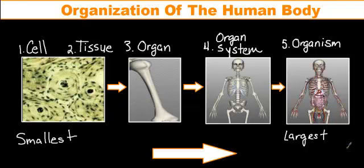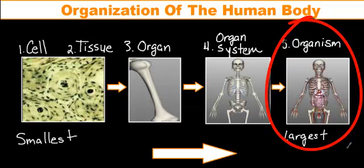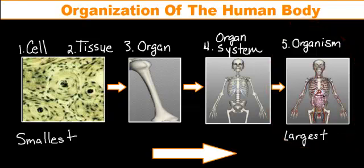Now that we've put all the organ systems together, two or more organ systems working together to help maintain homeostasis reaches the final and largest level of organization in the body, which is the organism. An organism is any living thing that can carry out its own life functions. So that concludes tonight's lesson on the organization of the human body. I hope this video was clear and simple for you guys — have a wonderful night. Thank you.